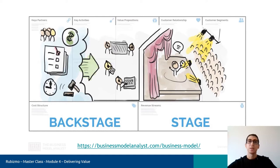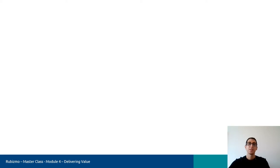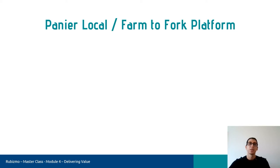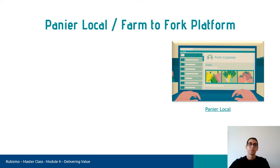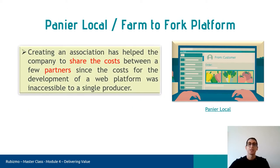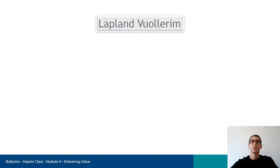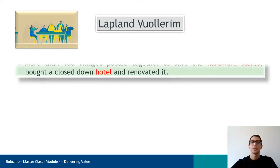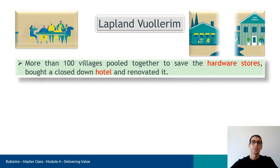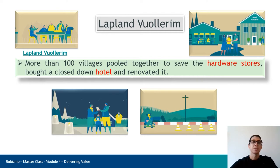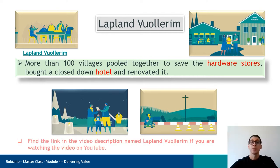There are a lot of innovations happening in the backstage that we don't notice. For instance, many things are happening in the backstage of the company Pania Loka — the case we worked on in the previous session — which are not visible to customers. Creating an association helped the company share costs between a few partners, since the cost of developing a web platform was inaccessible to a single producer. Additionally, the company gathered a team of experts offering support to producers in the daily use of the software. In the Laughland Woolery case, more than 100 villages put together to save the hardware stores, bought a closed-down hotel, and renovated it. Then, based on these valuable resources, they added activities to promote tourism — a collective work serving tourists by relying on the resources of the villagers.